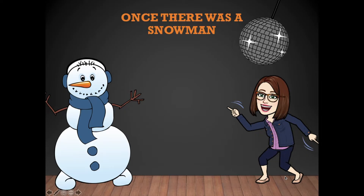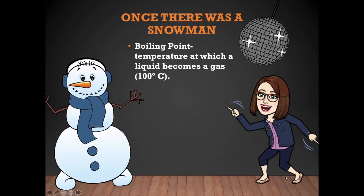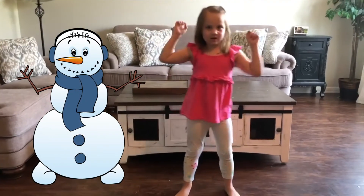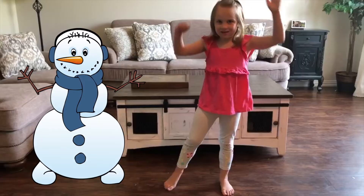Once there was a snowman. Snowmen can't stay around if they start to melt. So we're going to look at melting point, which for a snowman would be greater than zero degrees Celsius — he would begin to melt. The boiling point is when a liquid becomes a gas, and that's at 100 degrees Celsius. My niece is going to show us how a snowman goes from a solid to a liquid — and she's really cute, so you're going to like this.